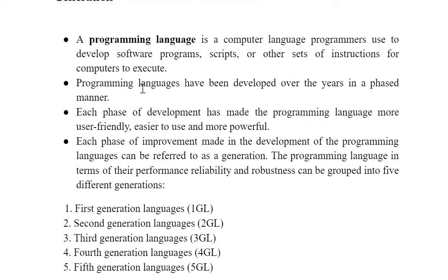Coming to the definition of programming language — what is a programming language? It is a computer language that is used to develop software. These are computer languages used by a programmer in order to develop software. For example, C programming is also a programming language. Java, C sharp — all these are programming languages. The main aim of every programming language is to develop a software program.